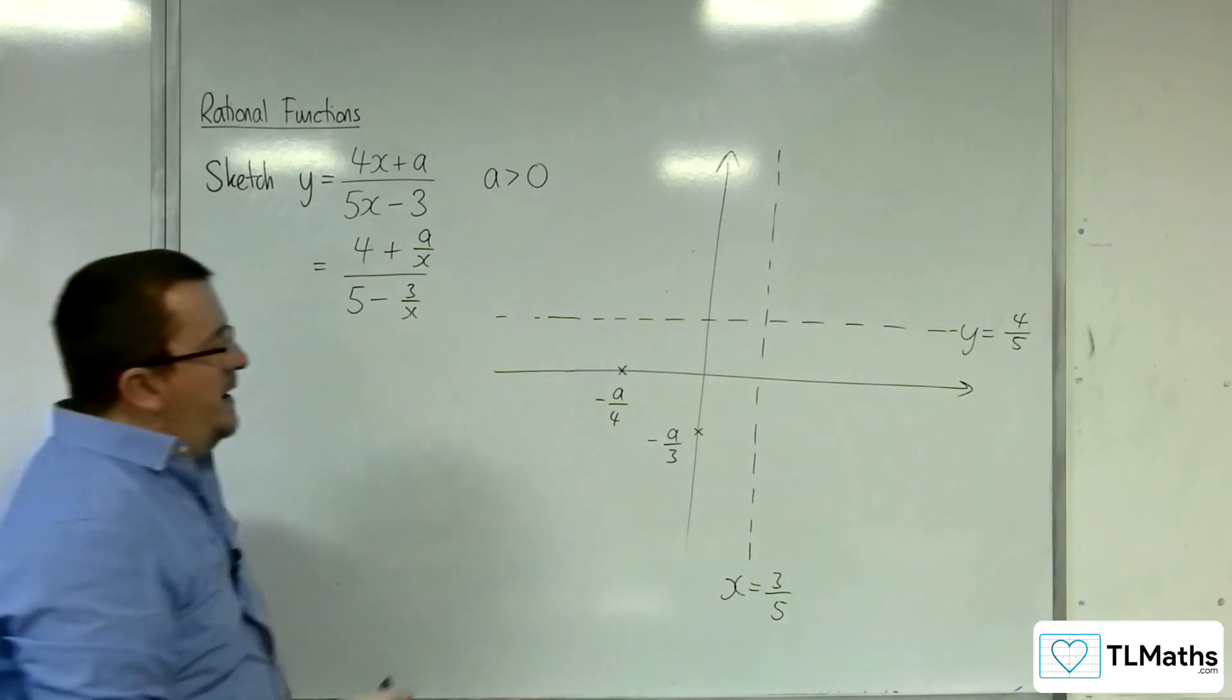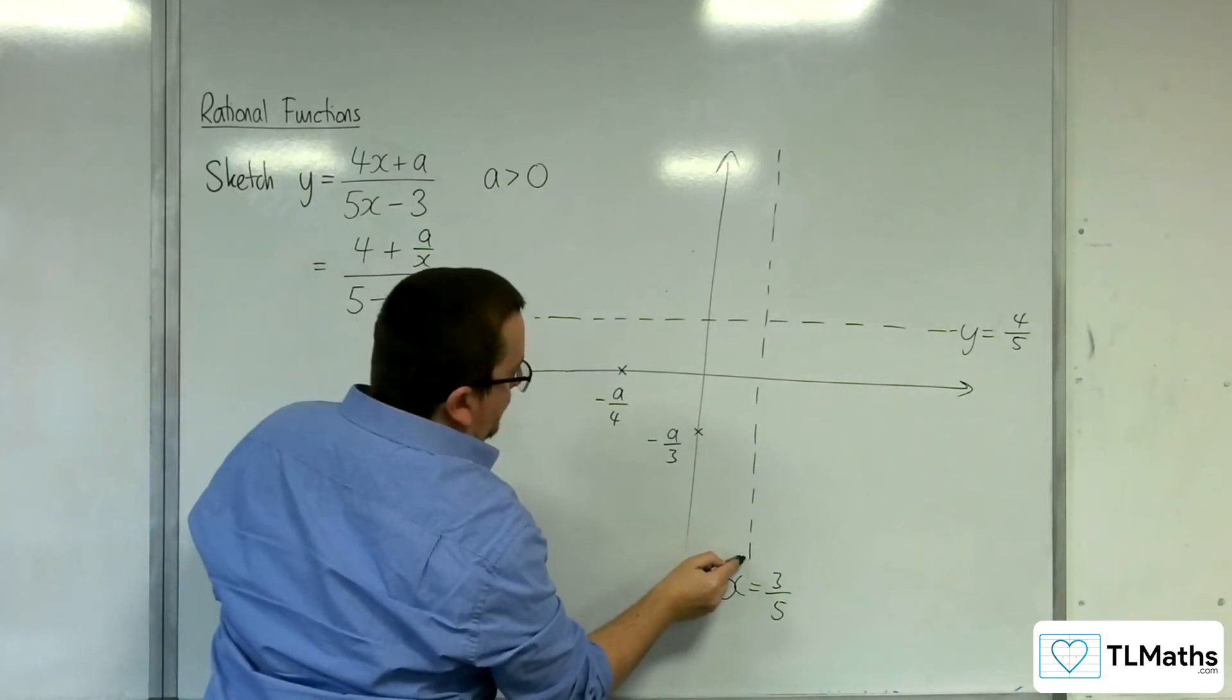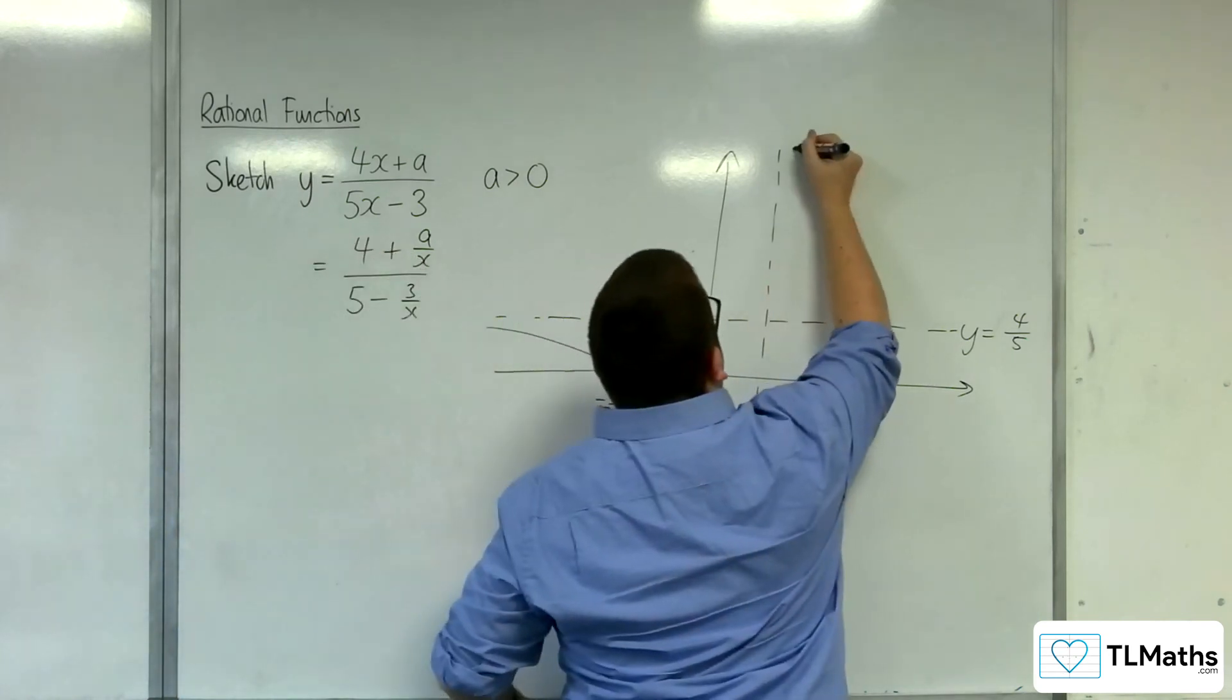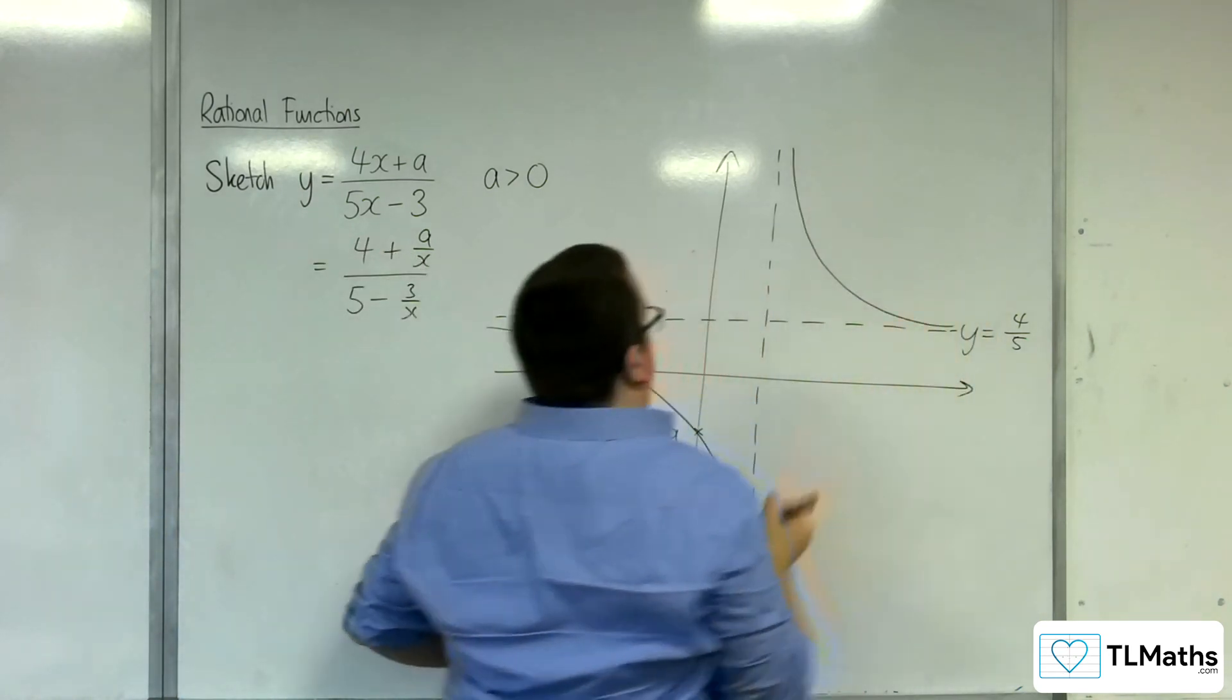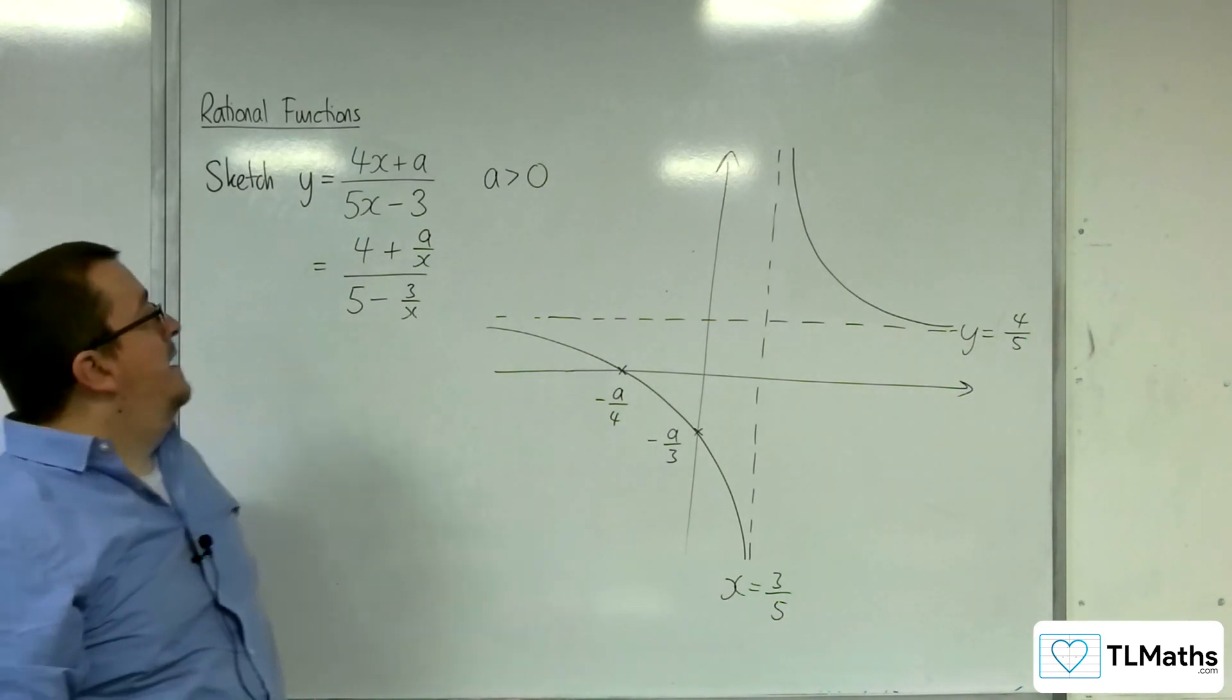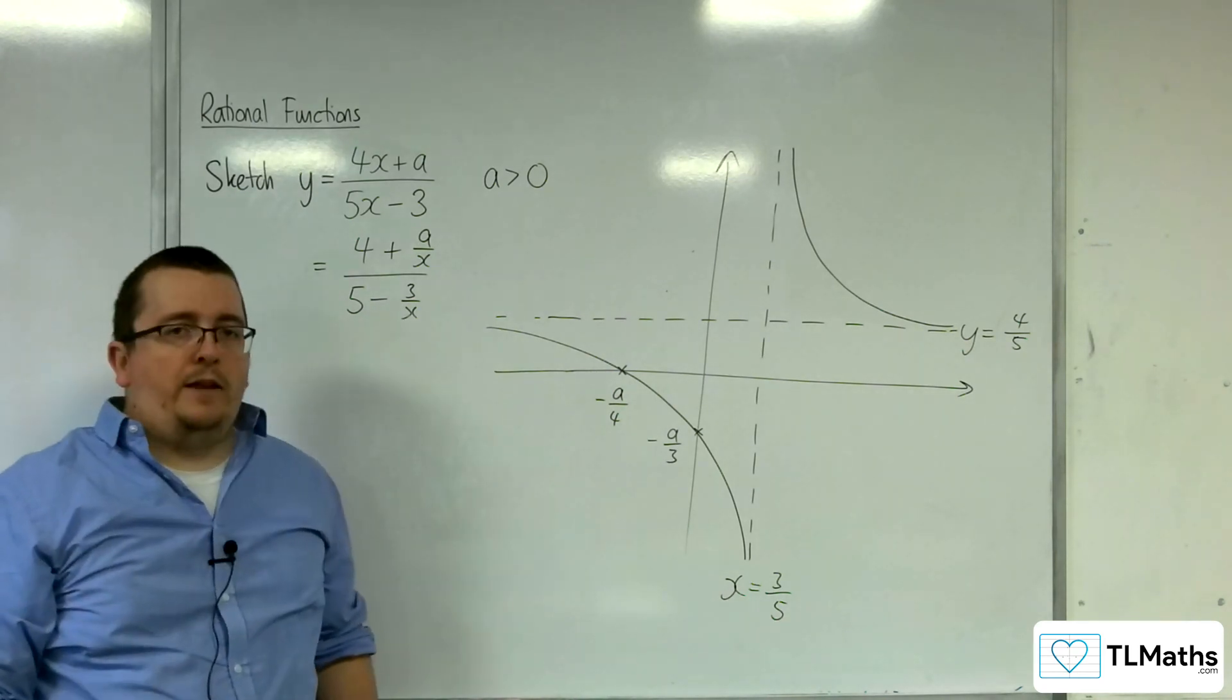Okay, and so now our curve must look something like this, with this portion of the graph being up here. Okay, and so that's how we can sketch y equals 4x plus a over 5x take away 3, where a is positive.